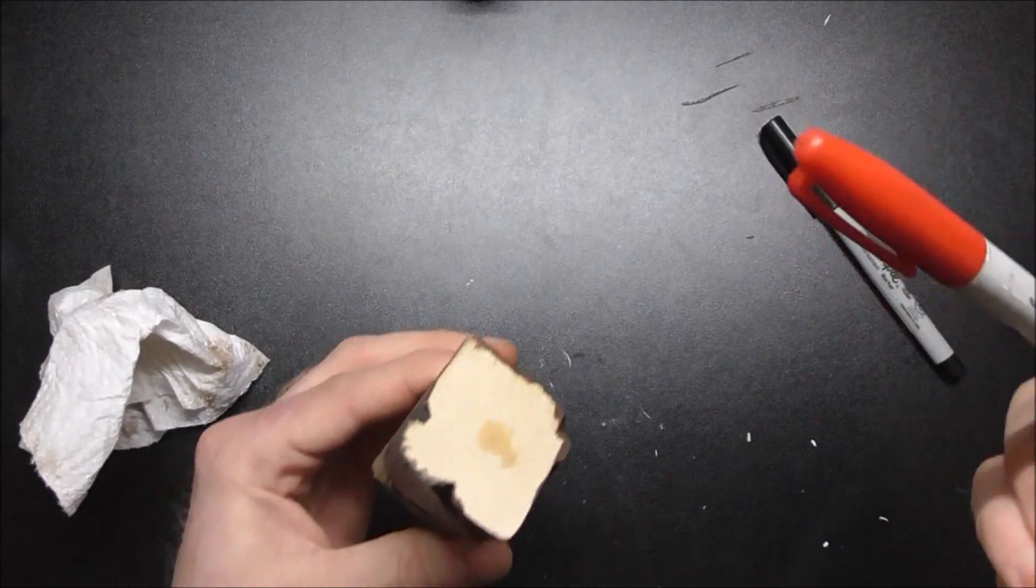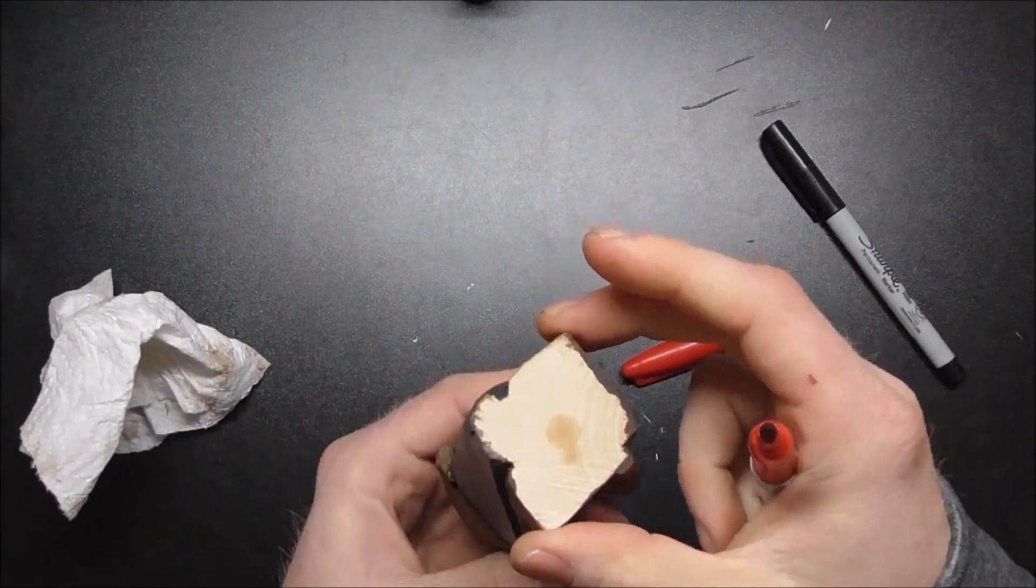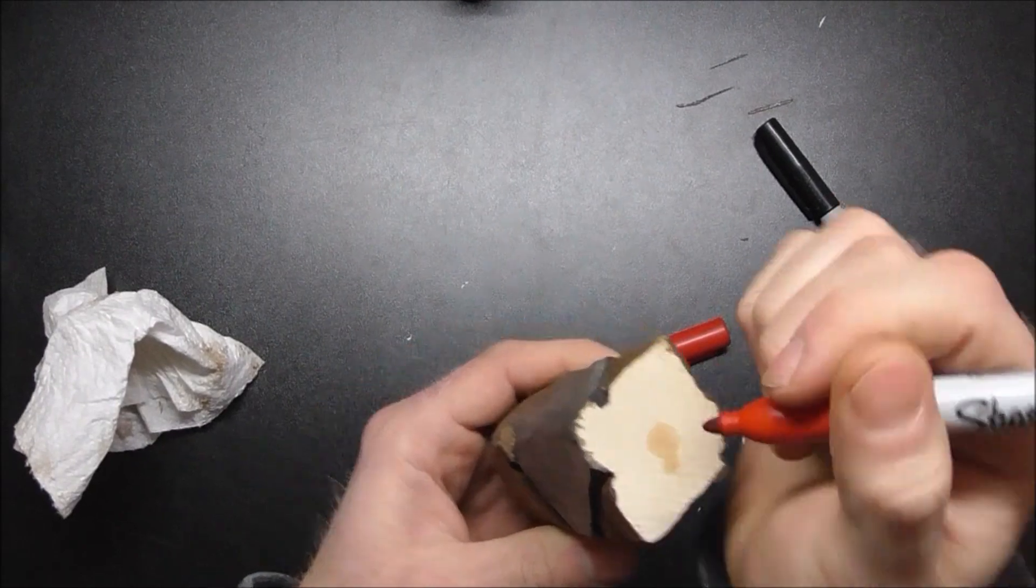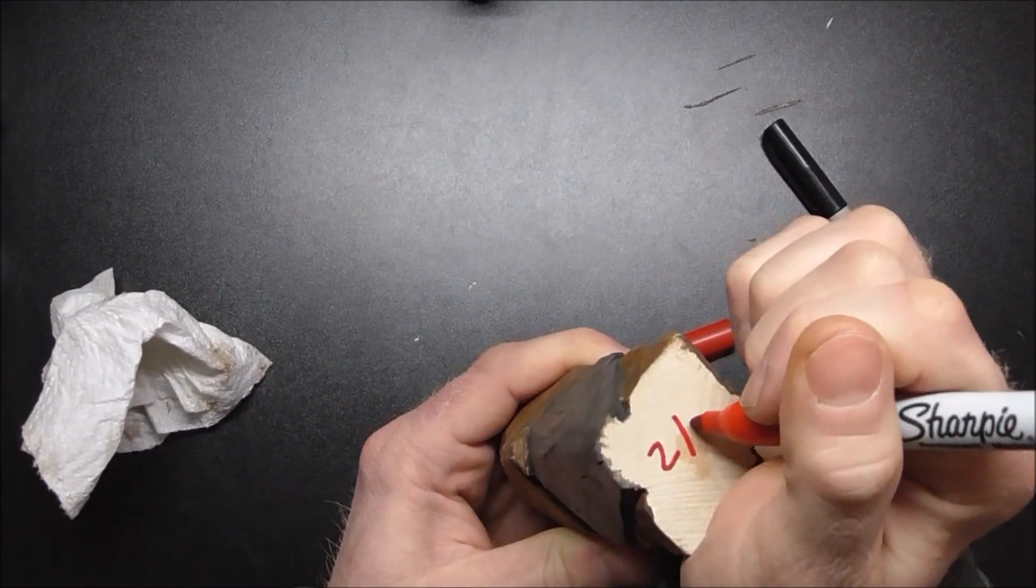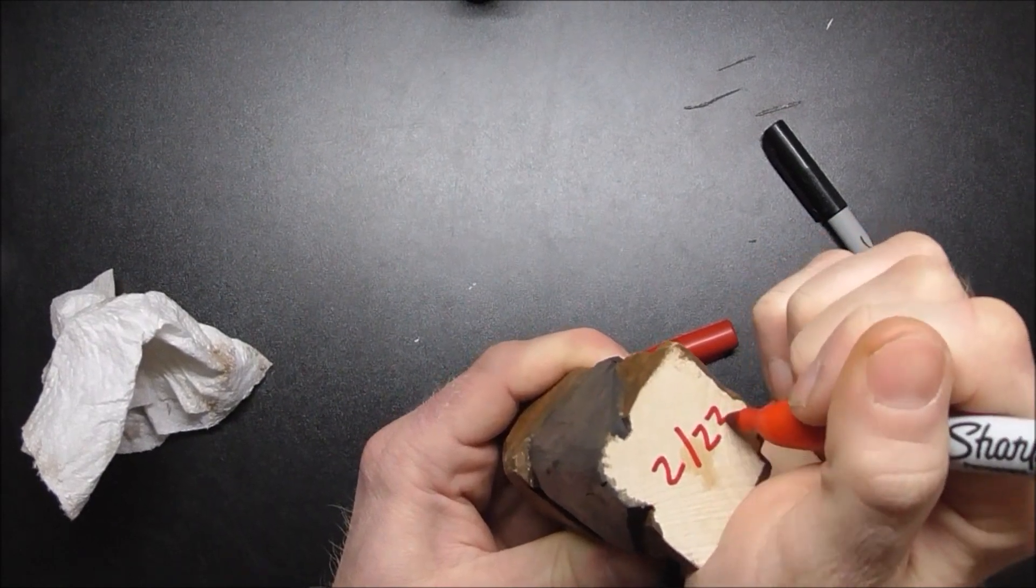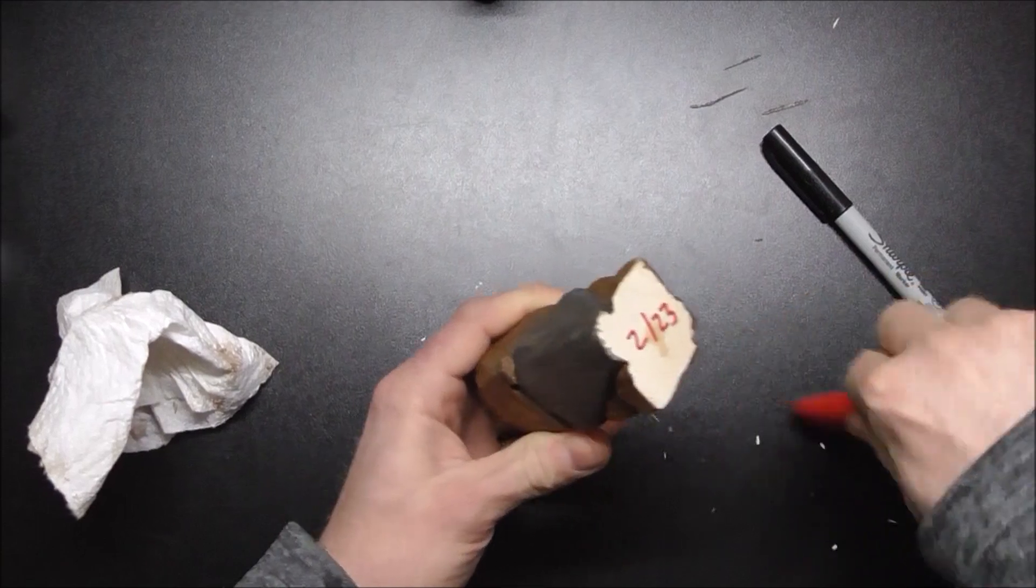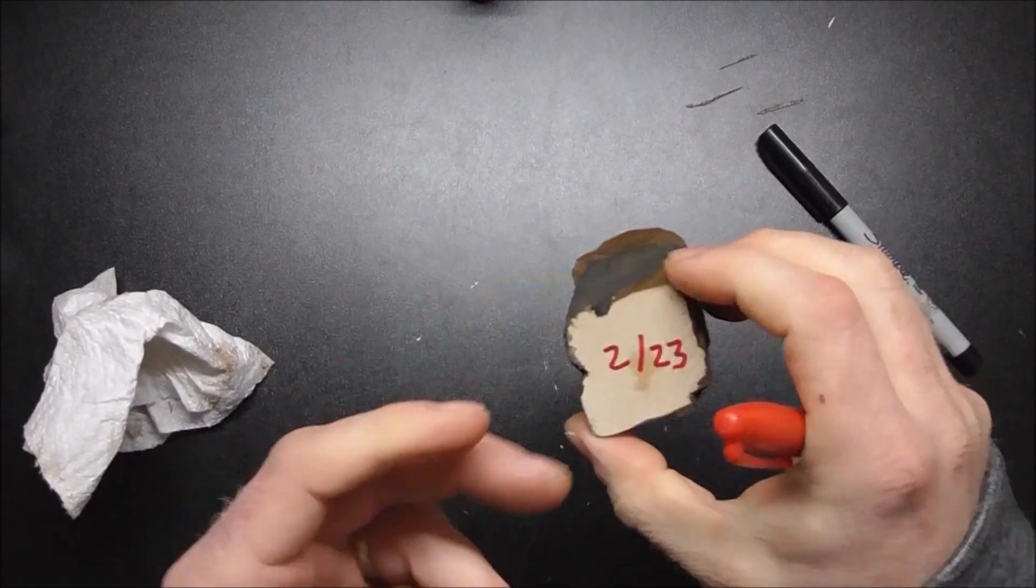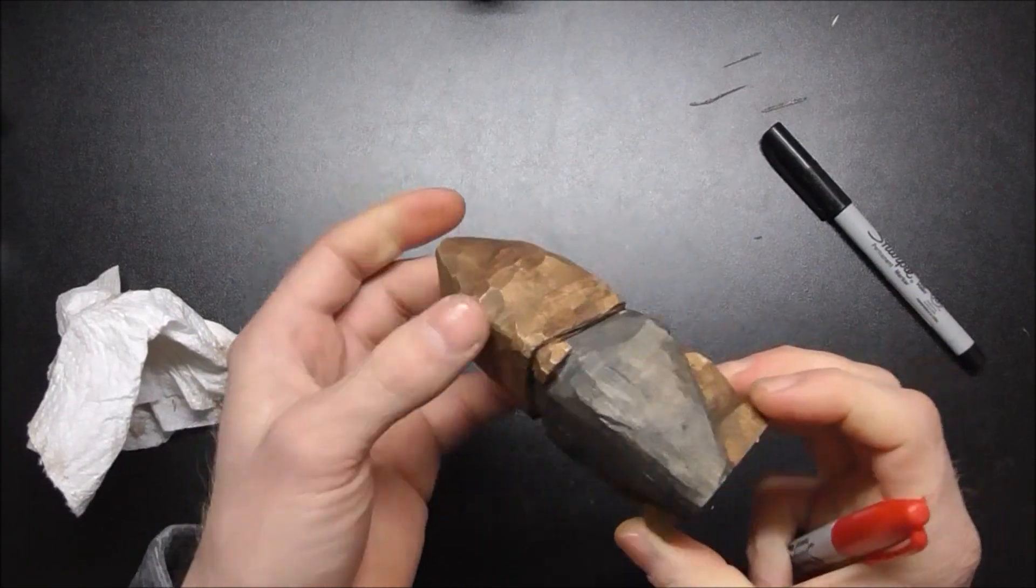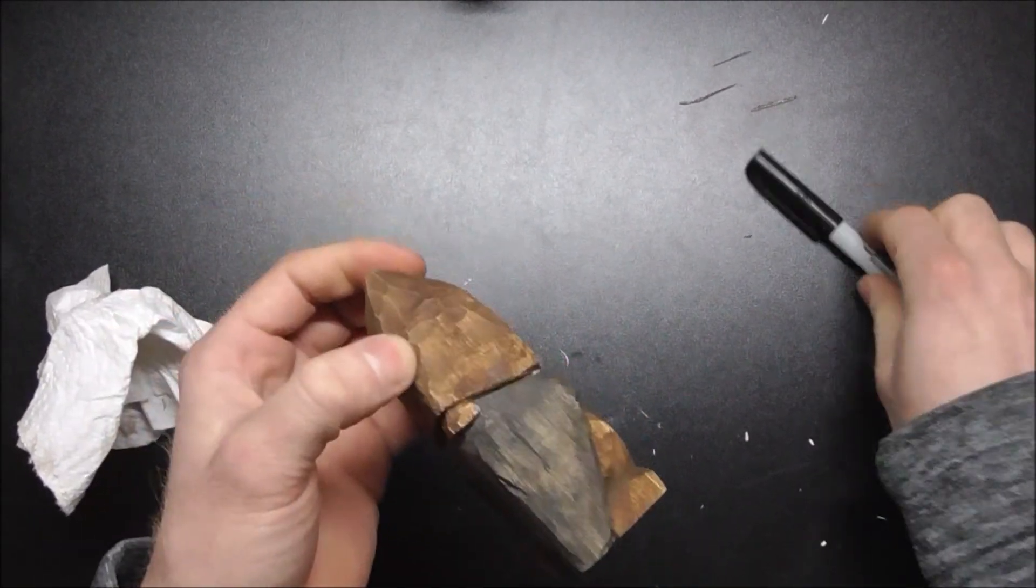Either way, take the sharpie and I like to basically whatever the month is - we're in February right now - put the two and then the year. Then I can look back at when did I carve this one. After a couple years you look back and you're like wow, this was one of my first carvings, and then you look at what you're doing at that time, you can see your progress. It's kind of cool.